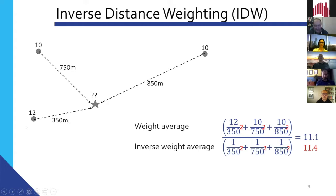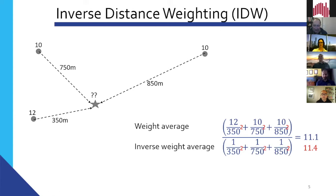If we squared those distances, we'd get a different result — a different predicted value. Squaring those results has the effect of increasing the weight of closer points. You can see here the value 12 is the closest point, and 10 and 10 are further away, so that predicted value has increased. That's a very quick background introduction to inverse distance weighting — a very simple technique, reasonably easy to explain.